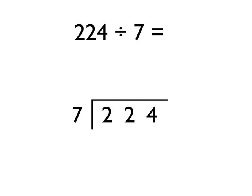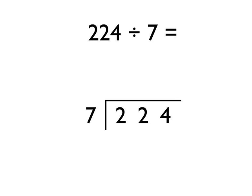Let's have a look at another example now, where we need to use remainders, just to get a bit more familiarity with them. We're going to do 224 divided by 7. We lay out our workings as before. Then we say: how many times does 7 go into 2? Well, 0 times. So we put the 0 up here, and there's 2 remainder — that 2 left over. So we write that 2 up here to turn this number into 22.